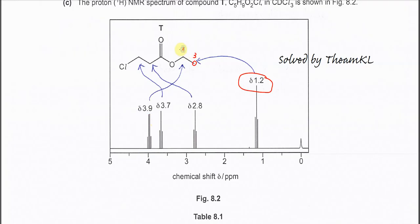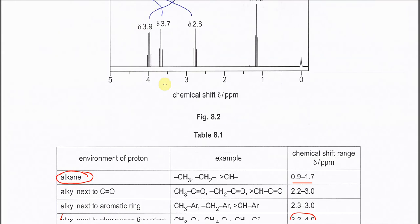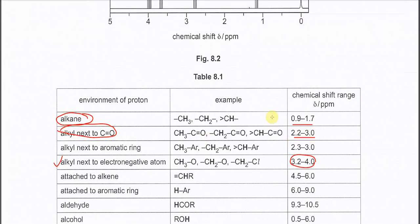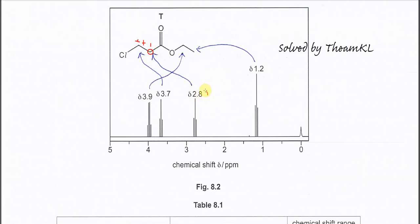Now let's look at the next CH2. This CH2's adjacent carbon has two protons, so it's 1+2, giving triplets. These triplets must be around 2 to 3 ppm because this CH2 is next to a carbonyl group. From the table, alkyl next to a carbonyl has a chemical shift around 2.2 to 3. So these triplets, around 3 ppm, belong to this CH2.